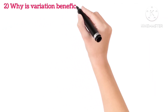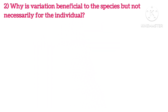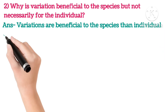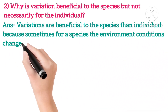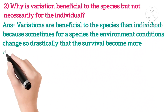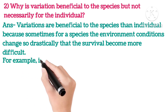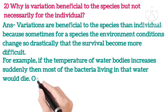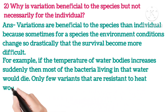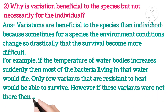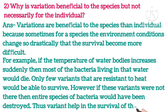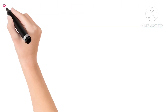Second: Why is variation beneficial to the species but not necessary for the individual? Variations are beneficial to the species rather than the individual because sometimes environmental conditions change so drastically that survival becomes more difficult. For example, if the temperature of a water body increases suddenly, most bacteria living in the water would die. Only a few variants resistant to heat will survive. If these variants were not there, the entire species would have been destroyed. Thus, variants help in the survival of the species.